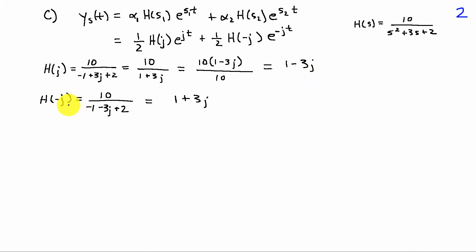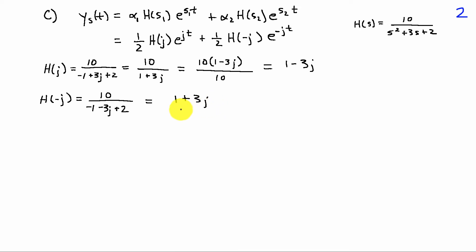We do the same for H(−j). Substituting −j for s in H(s), we obtain 10 / (−1 − 3j + 2) = 10 / (1 − 3j). Following the same simplification process, this gives us H(−j) = 1 + 3j.